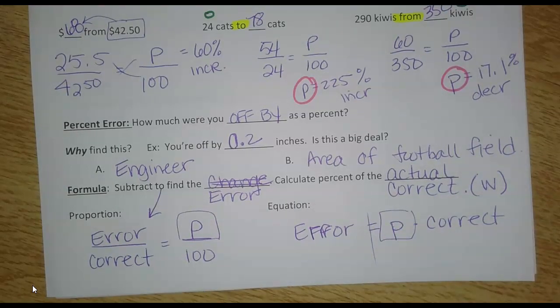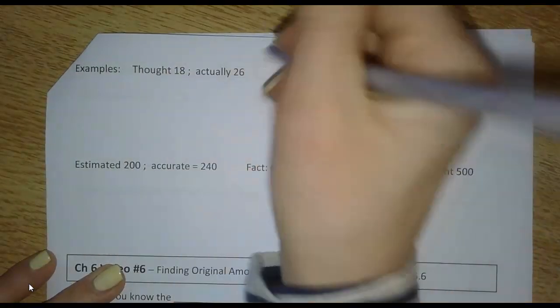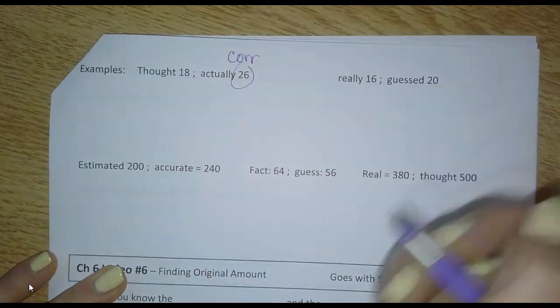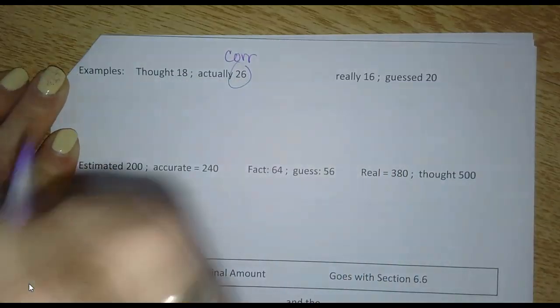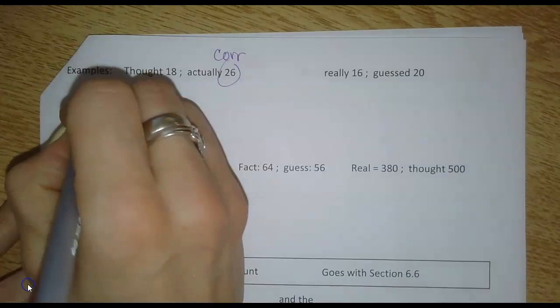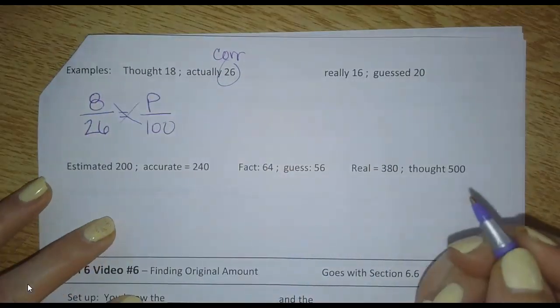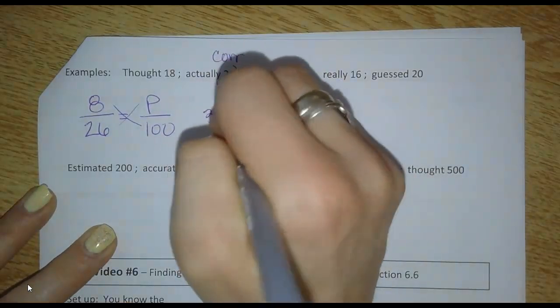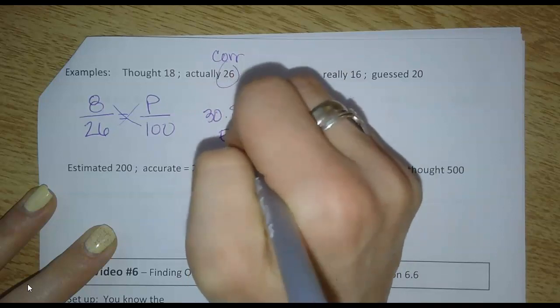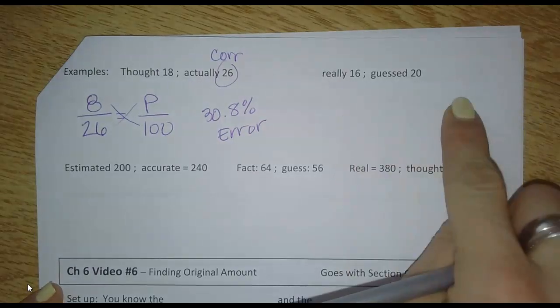So let's do one example each way. You thought it was 18, it was actually 26. So this is going to be the number we use for the correct value. Well, how much were you off by? So I would subtract 26 minus 18, and I get that I was off by eight. The correct number is 26. I'm looking for P. So I would cross multiply that, type that into your calculator, and I get 30.8% and we label it error. So you're off by 30%.